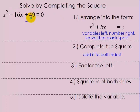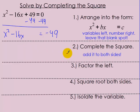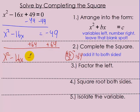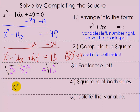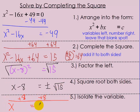Solve by completing the square. First, arrange it: subtract 49 from both sides to get x squared minus 16x equals negative 49. To complete the square, half of 16 is 8, and 8 squared is 64. Add 64 to both sides: x squared minus 16x plus 64 equals negative 49 plus 64, which is 15. Factoring the left: x minus 8 squared equals 15. Square root both sides: x minus 8 equals plus or minus square root of 15. Add 8 to both sides: x equals 8 plus or minus square root of 15. That's your answer — you can leave it in that format.